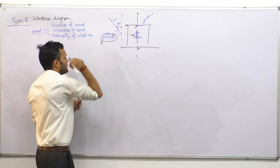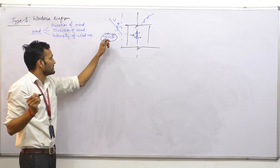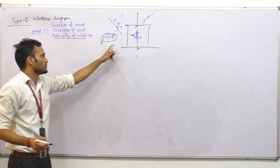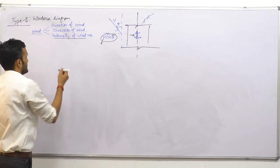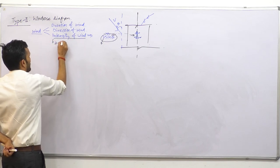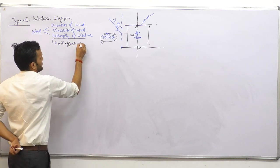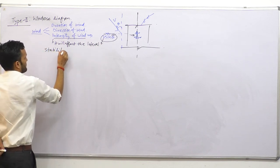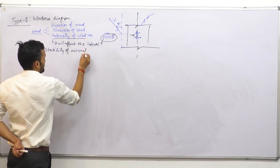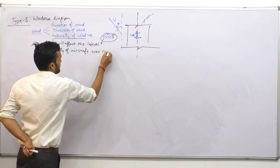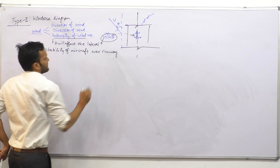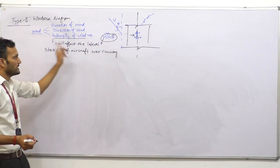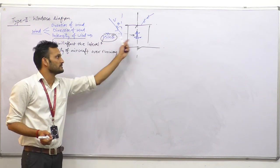That is why the third parameter, intensity of wind, is important — its cross-wind component is going to affect the lateral stability of the aircraft. The importance of Type 2 Wind Rose diagram becomes clear: it is going to affect the lateral movement of the aircraft.